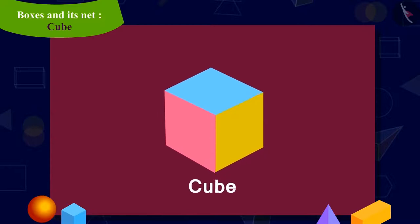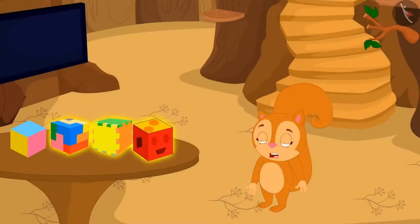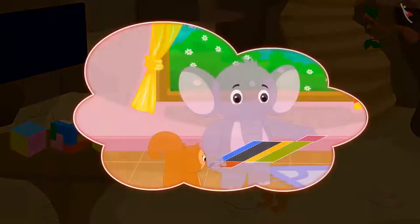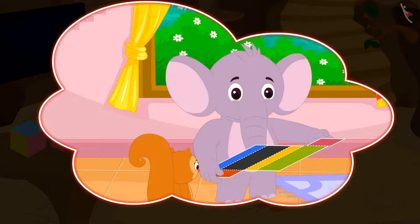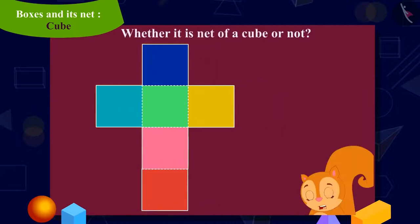And see that a box for Chanda is ready. Now Chanda has to make three more boxes for the remaining toys. Chanda remembered that Appu told her that more than one net of every three-dimensional shape is possible. Chanda now made a shape like this.